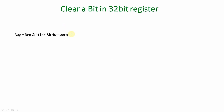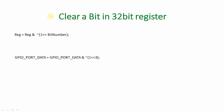Now here is the technique for clearing a particular bit in a register without disturbing the rest of the bits: REG = REG & ~(1 << bit_number). For example, GPIO_port_data = GPIO_port_data & ~(1 << 3) will clear bit number 3. Irrespective of whether the bit is currently 1 or 0, it will make bit number 3 become 0.